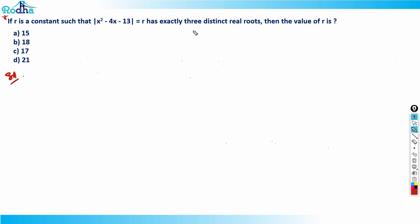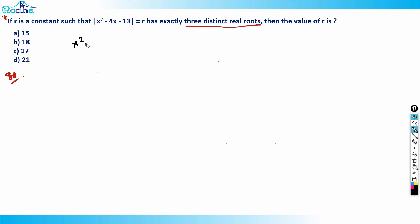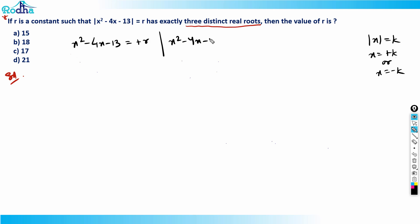We need to solve for three distinct real roots. If we just blindly write x² - 4x - 13, and apply the modulus rule — mod x = k means x = +k or x = -k — then in one case we get +r and the other case -r. Since each case is a quadratic, we'd normally get two roots each, making four roots total. But the question requires only three distinct real roots.